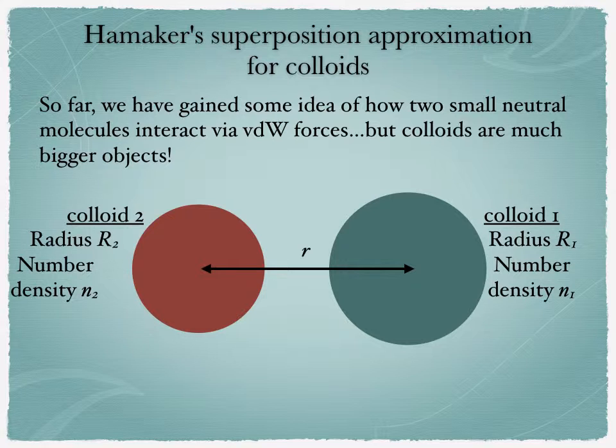Once you've done that, you can look at specific points, p1 and p2 on colloid 1 and colloid 2 respectively. About these two points, you can look at a neighboring volume dv1, in which you know that you will have n1 dv1 molecules. And the same thing is true for p2, you can have a neighboring volume dv2 about p2, in which you will have n2 dv2 molecules.